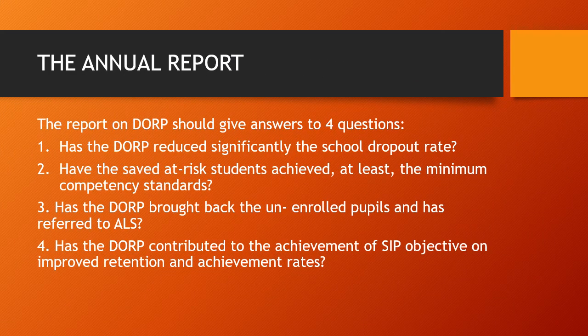At the end of the school year, when the school head presents the annual report to the stakeholders, the report on DORP should answer four questions: Has the DORP reduced significantly the school dropout rate? Have the students at risk achieved at least the minimum competency standards? Has the DORP brought back unenrolled pupils and referred them to ALS? And has the DORP contributed to the achievement of SIP objectives on improved retention and achievement rates? Thank you so much everyone for following up until the end of the presentation.